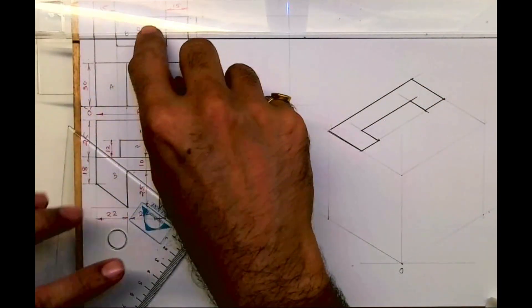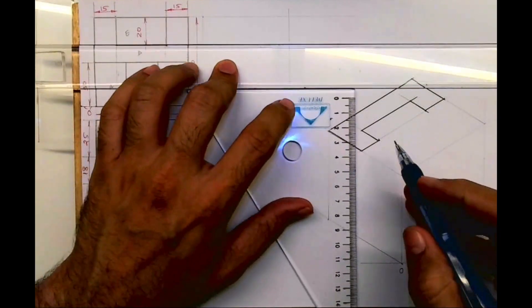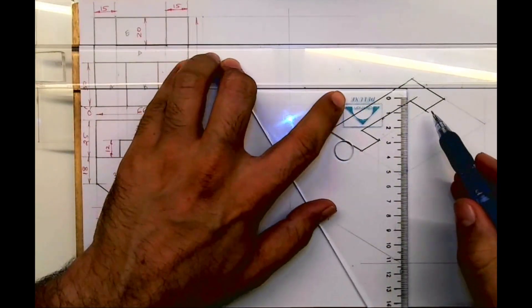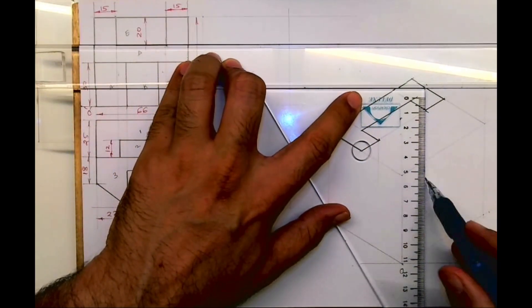See, this part is done. Now this part is how much down? 20. So we'll go down by 20.